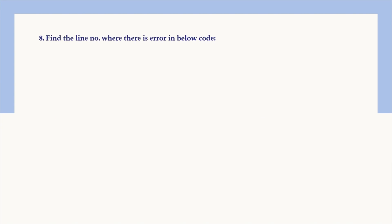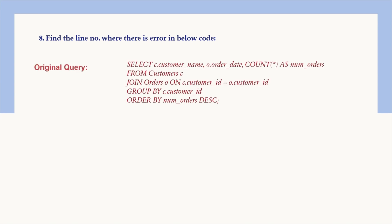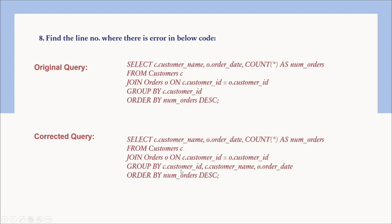The eighth question: find the line number where there is an error in the given code. As we discussed, non-aggregated columns must appear in the GROUP BY clause. In the query, one column is aggregated, but customer_name and order_date are non-aggregated and are missing from GROUP BY. The corrected query adds customer_name and order_date to the GROUP BY clause alongside customer_id.